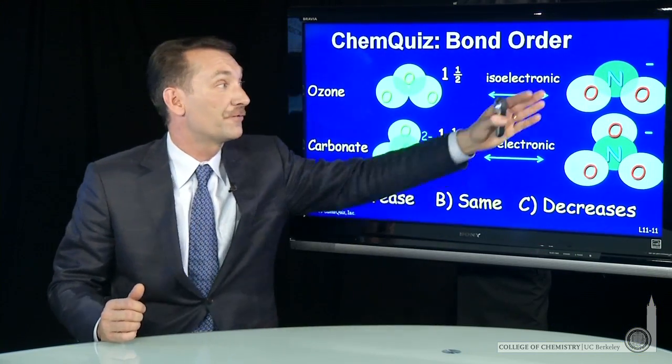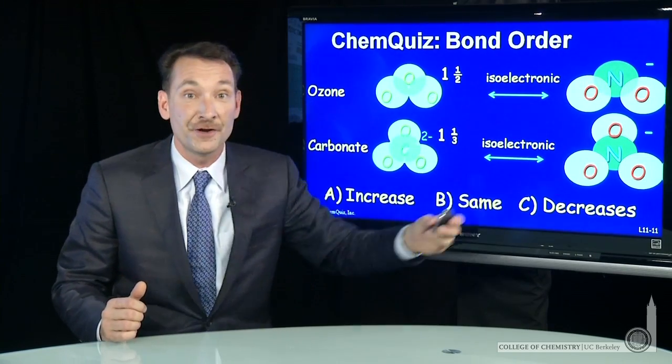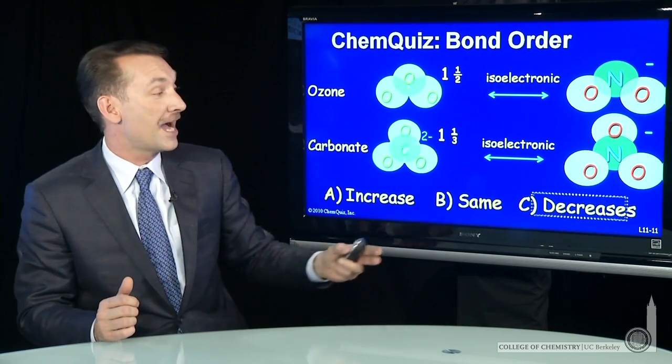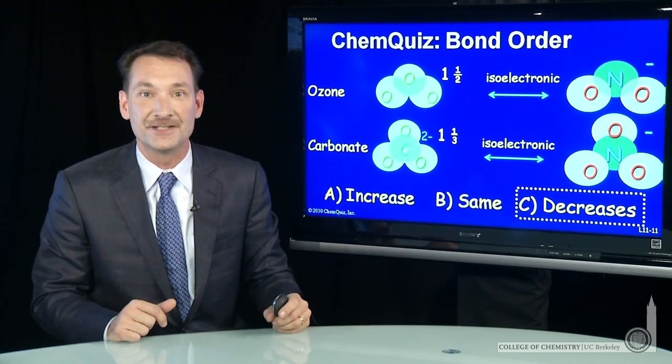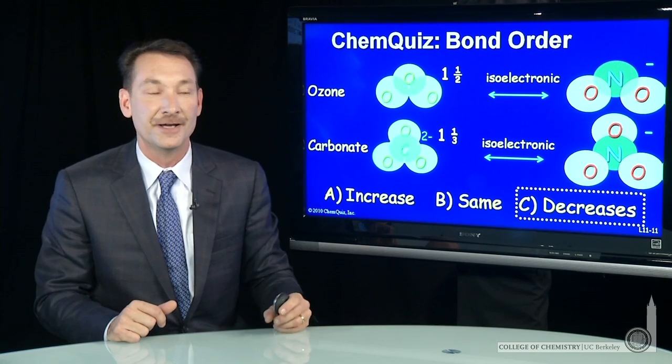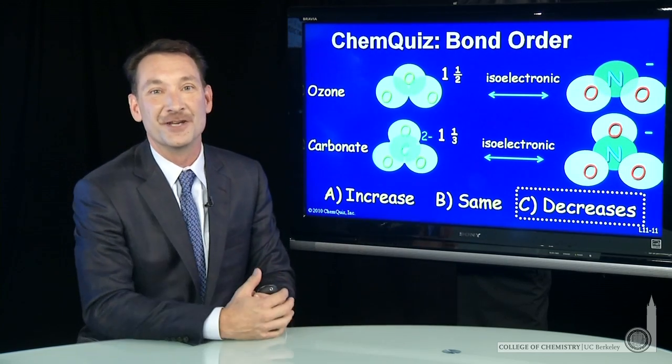So going from 1 and 1 half to 1 and 1 third in that oxidation reaction decreases the bond order. The correct answer here: decreases.